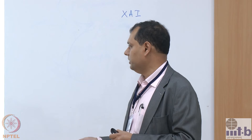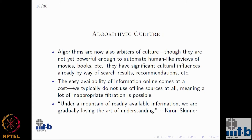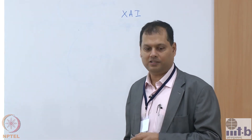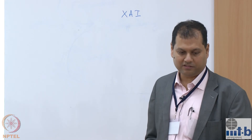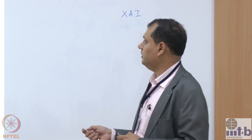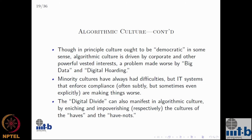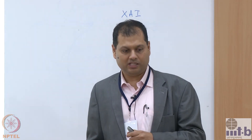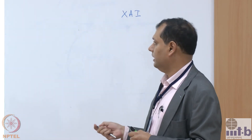This is also a problem. A professor at CMU noted that there is a lot of data available but we are not processing it very well, because ultimately you have to understand it in your mind — and that's not really happening. We are losing the art of understanding. Culture ought to be democratic in some sense — your culture and my culture, we all have a vote. But algorithmic recommendations are driven by corporate greed and are not really democratic in any sense.